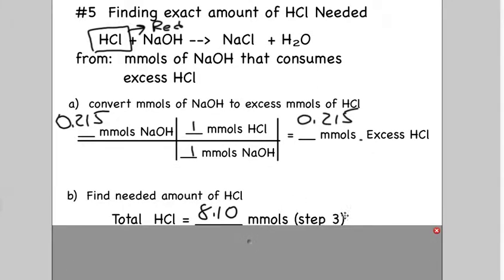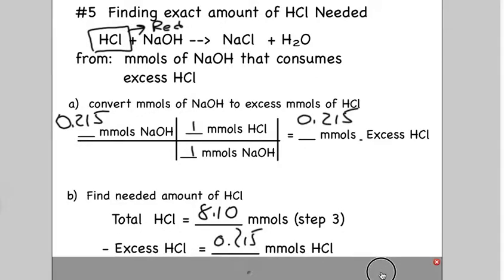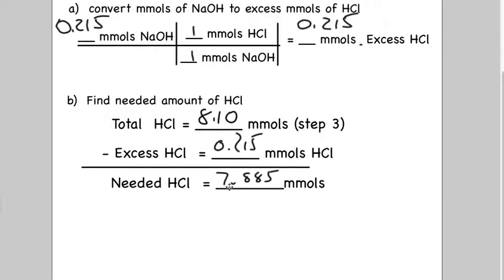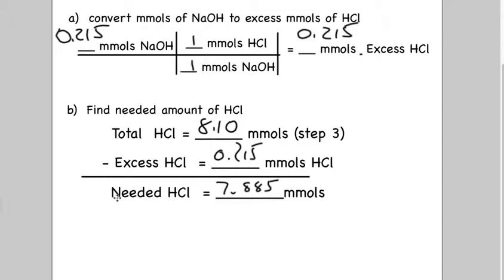All right, so we'll go back to our beginning step. If we had a total of 8.10 from the beginning of millimoles, we figured out the excess was 0.215. We must have had 7.885 millimoles of HCl that was needed in a perfect ratio to consume the baking soda.